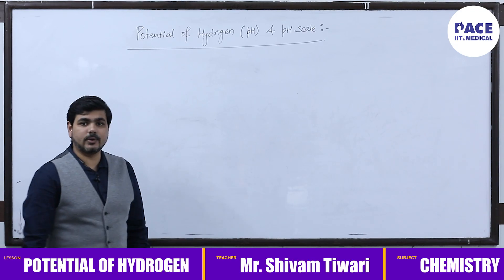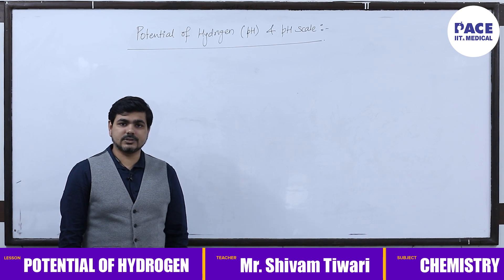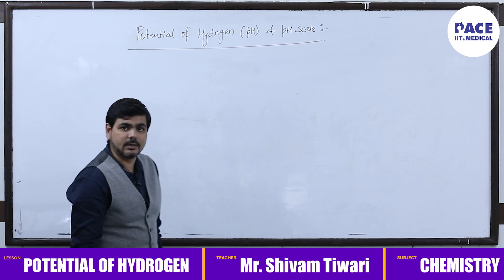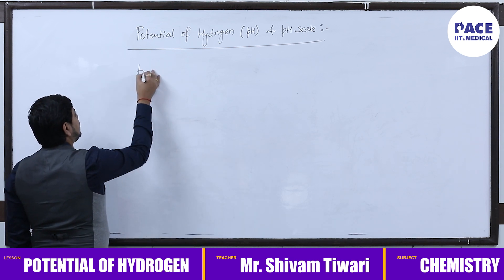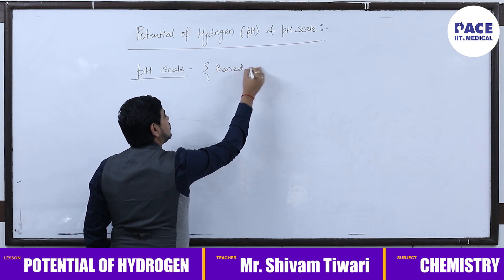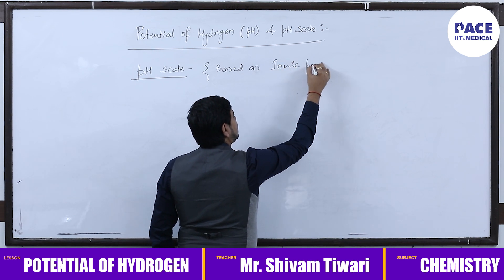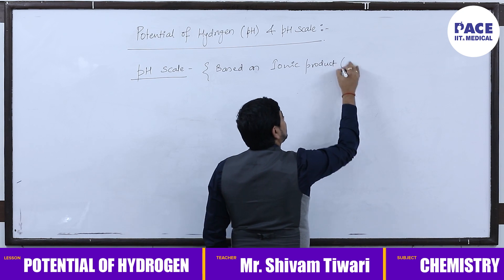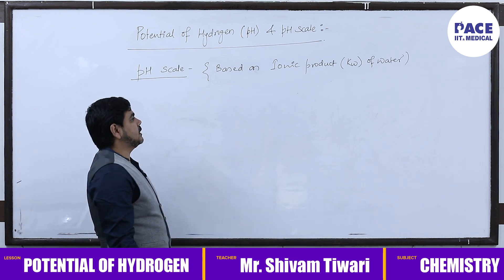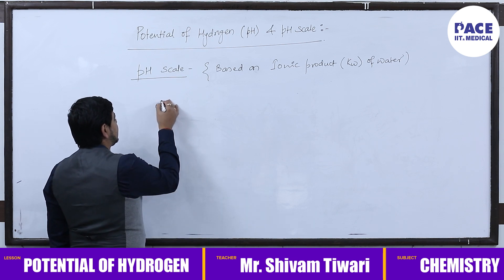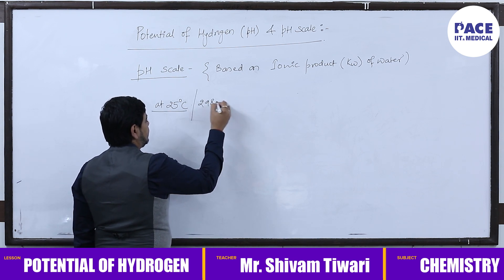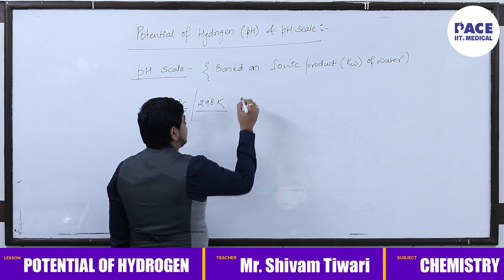Hello students. In today's class we are going to understand potential of hydrogen — pH and the pH scale. This pH scale, you might be aware, ranges from 0 to 14. This pH scale is based on the ionic product Kw of water. The pH scale is defined as 0 to 14 based on the ionic product of water at 25°C or 298 Kelvin.